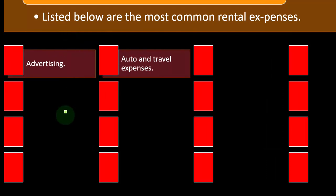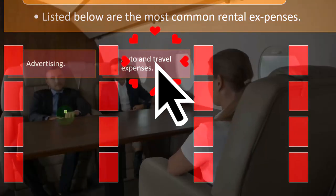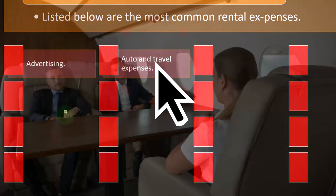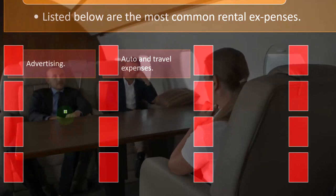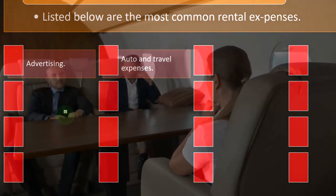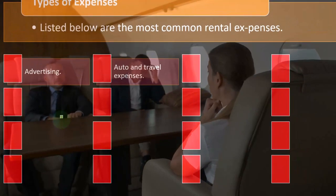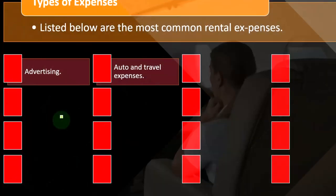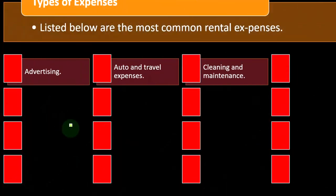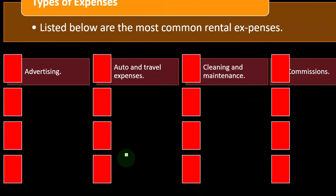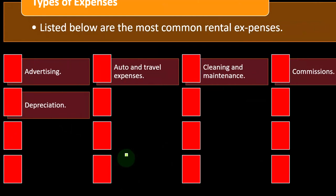The expenses will be those common to owning rental property. Advertising is a common expense for just about any type of business. Auto and travel expenses get a bit confusing — do we use a mileage method or a direct method, and do we depreciate autos? But use of the auto, like any normal business, would be an ordinary and necessary expense.